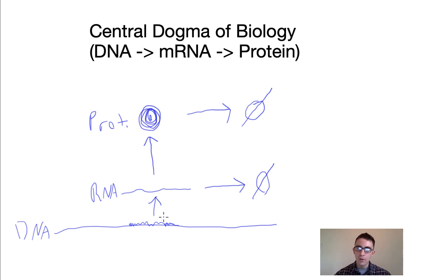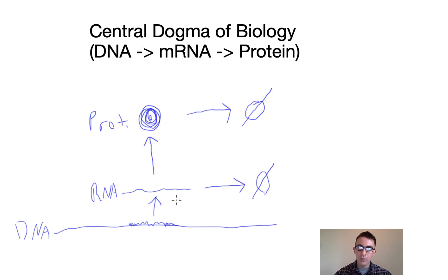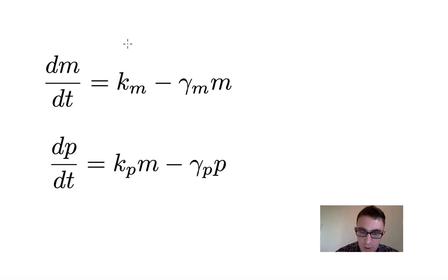Before we get to the ODE model, I want to point out there are four rates we're interested in. For ODE models it always helps to draw things out so we can see what's going on. We have the production rate for RNA, the degradation rate for RNA, the production rate for the protein, and the degradation rate for the protein.